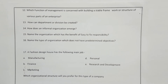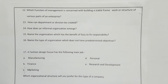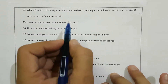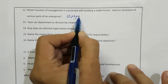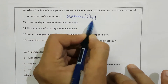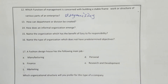Which function of management is concerned with building a stable framework or structure of various parts of an enterprise? The function of management related to building a stable framework is none other than organizing. Organizing is a kind of framework within which all persons of the organization function.